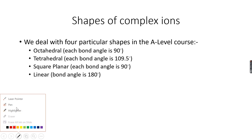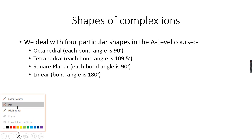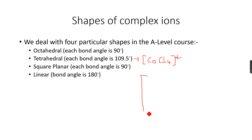That was octahedral, and now we are going to do tetrahedral complex ions. If we look at a complex ion like cobalt — I'll give you an example of a tetrahedral complex ion — we have CoCl₄²⁻. This is a tetrahedral complex ion, and I'll show you how it is tetrahedral.